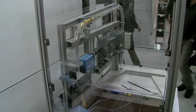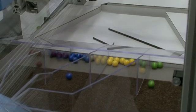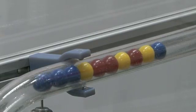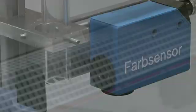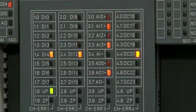The example presents our function for the AC500 — that's a decentralized electronic cam switch. We show it here in the demo with sorting small colored balls: different colors — red, yellow, green, and blue. The balls are falling down and the color is detected by the sensor.